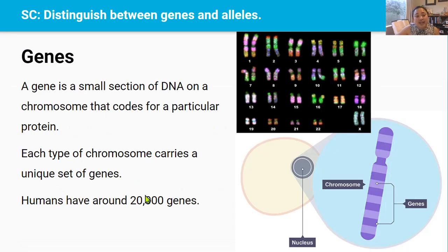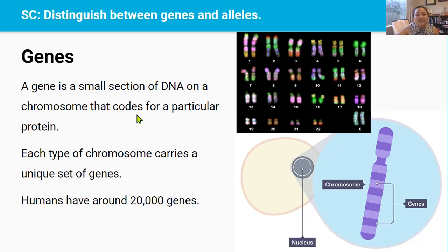The inheritable traits or characteristics an organism has are determined by their genes. A gene is a short length of DNA found on a chromosome that codes for a particular protein. Each protein, by itself or together with other proteins, then causes the expression of a particular trait. This could be hair curliness, flower color, or eye color.